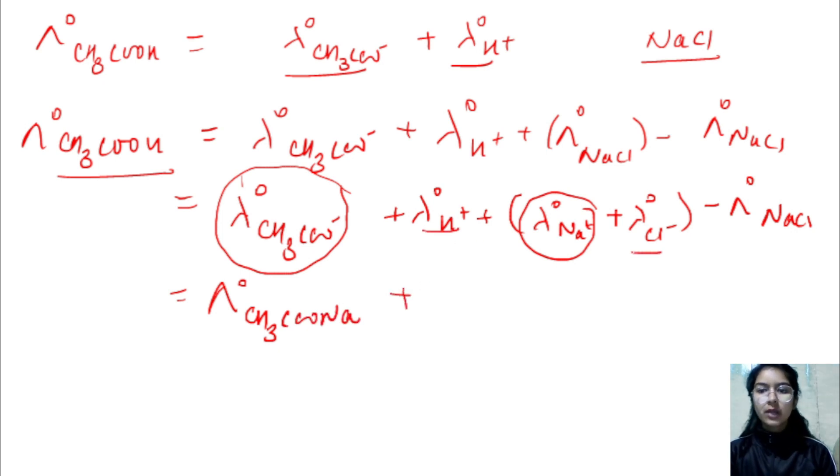Similarly, if I add them, what will I get? HCl. So minus this. This was my weak electrolyte, but now this, this and this - what are our strong electrolytes? So I can easily calculate the value.